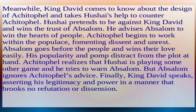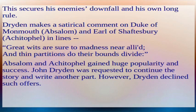King David comes to know about Achitophel's design and takes Hushai's help to counter him. Hushai pretends to be against King David and wins the trust of Absalom, advising him to win the hearts of the people. Achitophel works within the populace, fomenting dissent and unrest. Absalom goes before the people and wins their love easily, though his popularity and pomp distract him from the plot at hand. Achitophel realizes that Hushai is playing some other game and tries to warn Absalom, but Absalom ignores his advice. Finally, King David speaks, asserting his legitimacy and power in a manner that brooks no refutation, securing his enemies' downfall and his own long rule.